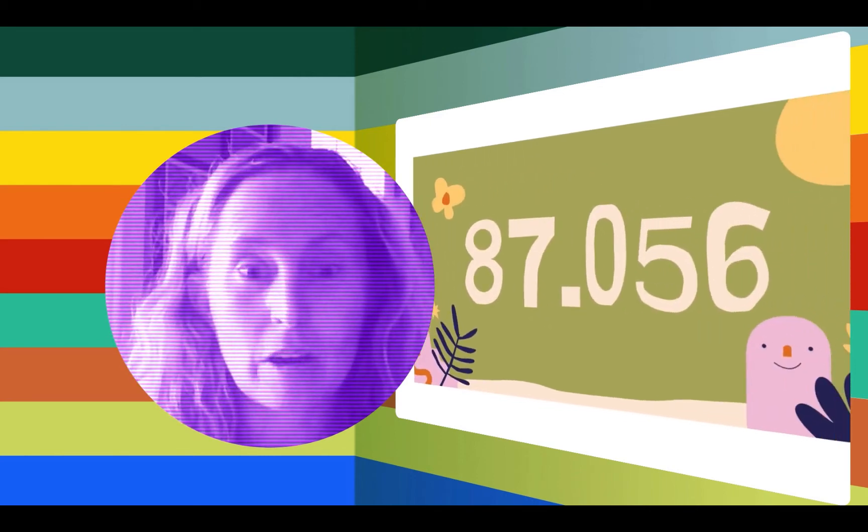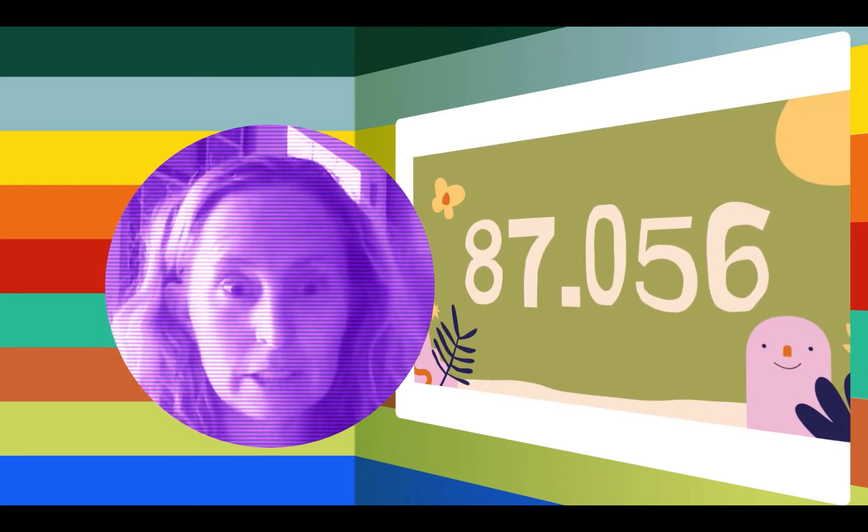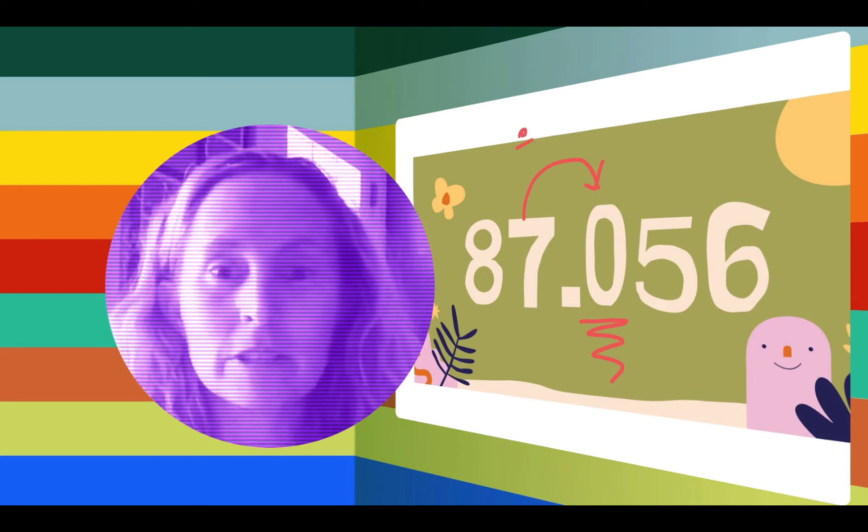Now the place value chart for decimals is something you might just have to memorize, but we're going to do a lot of things with models and explore just how this works. If you had a one dollar bill and you broke it into ten equal pieces, you would have a tenth or a dime.